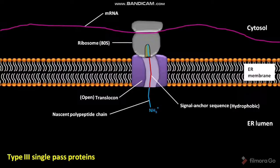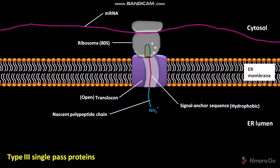On the C-terminal side of the signal anchor sequence, some positively charged amino acids are present. Due to these positively charged amino acids, the transmembrane segment of the nascent polypeptide chain locates itself within the translocon, and the C-terminal portion of the nascent polypeptide chain is oriented to the cytosol, whereas the N-terminal portion is oriented to the ER lumen.